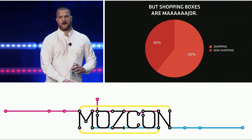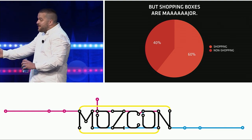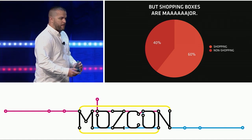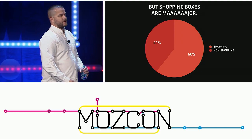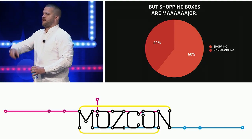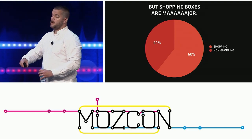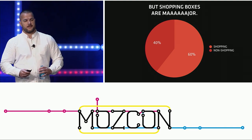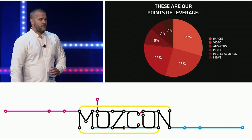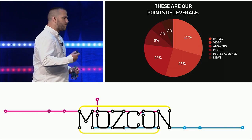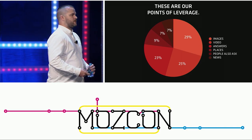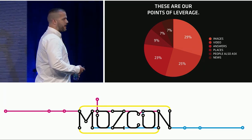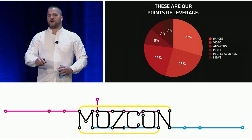Google tells us you have to be there, be useful, and be quick — and the organic algorithm goes 90% of the way to providing that. But today I want to focus on that remaining 10%. Of the non-organic results on the SERPs, 60% are shopping boxes. For e-commerce keywords, you have to expect shopping boxes — ignore this data at your own peril. If you want to win in this space, you definitely need a paid strategy.